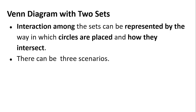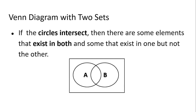The interaction among sets can be represented by the way we place the circles — how the circles intersect with each other represents the relationship between the sets. There can be three scenarios. In the first scenario, we have two sets, set A and set B. If the two circles intersect with each other, then there are some elements in that overlapping region which are common to both set A and set B, and there are also elements unique to one of the sets.